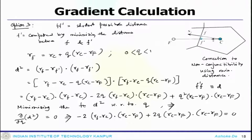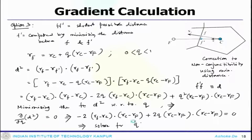We minimize the function d squared with respect to Q. Taking d/dQ of d squared equals 0, the derivative gives: minus 2(Rf minus Rc) dot (Rc minus Rf) plus 2Q times (Rc minus Rf) dot (Rc minus Rf) equals 0. Solving for Q, we get Q equals minus (Rcf dot Rcf) divided by (Rcf dot Rcf), which simplifies to the expression involving Rcf.